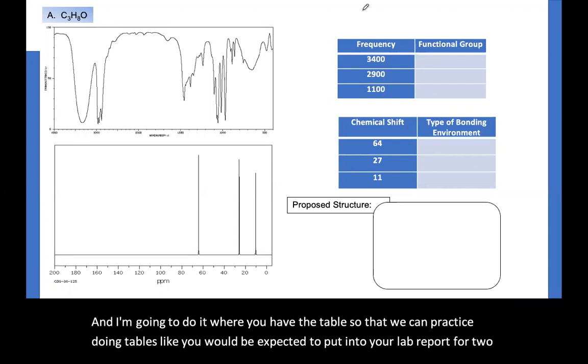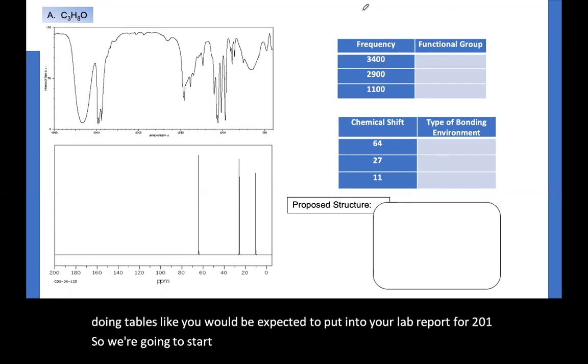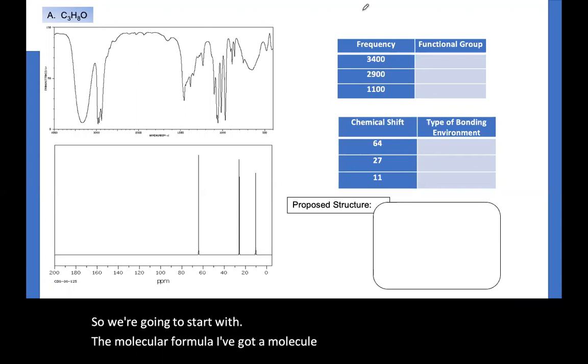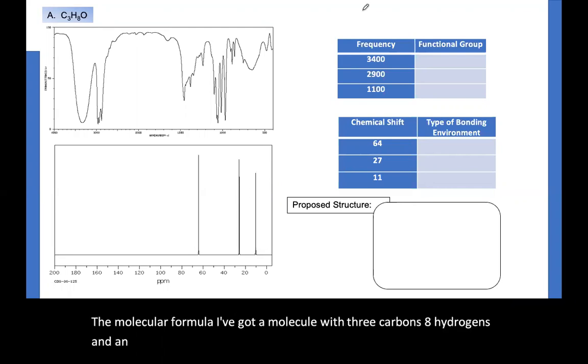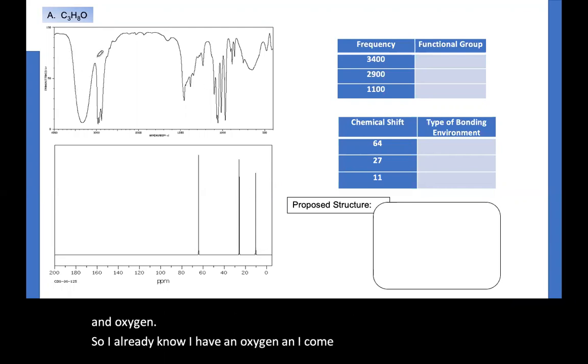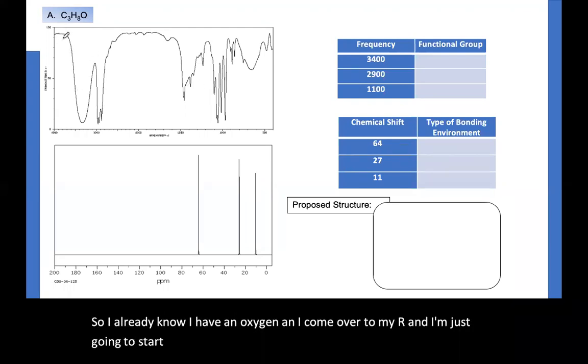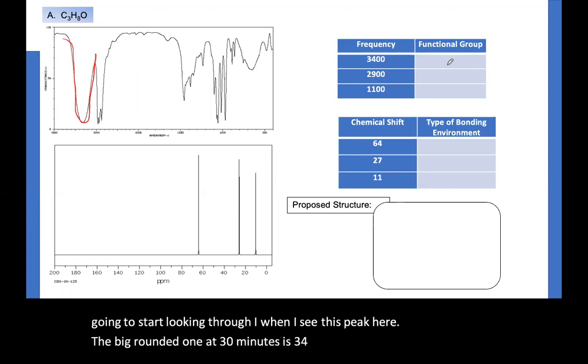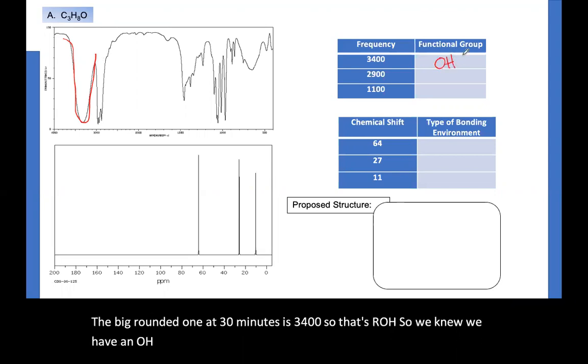So we're going to start with the molecular formula. I've got a molecule with three carbons, eight hydrogens, and an oxygen. So I already know I have an oxygen, and I come over to my IR, and I'm just going to start looking through. I see this peak here, the big rounded one at 3400. So that's our OH. So we know we have an OH, and that fits with our molecular formula.